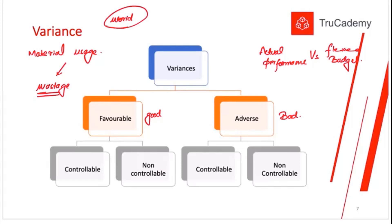We will calculate both types of variances — favorable and adverse — then classify them as controllable or non-controllable. Non-controllable ones we cannot do anything about. But for controllable variances, managers are required to take corrective actions to ensure these variances do not repeat again in the future.